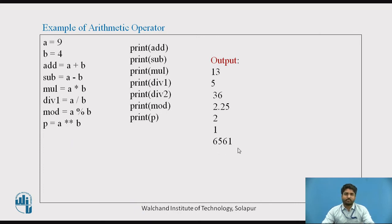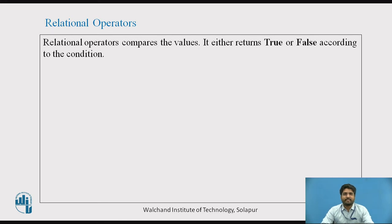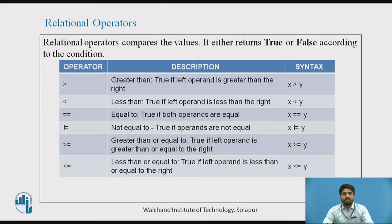Relational operators: Relational operators compare the values. It either returns true or false according to the condition. This table shows the relational operators - three columns: symbol or operator, description, and syntax. There are two variables x and y.